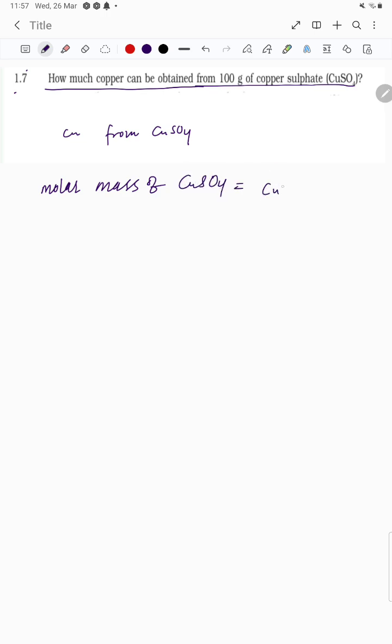Copper is 63.5, mass of copper is 63.5, sulfur is 32, and oxygen is 16 multiplied by 4. In other words, you can write 63.5 plus 32 plus 16 multiplied by 4.